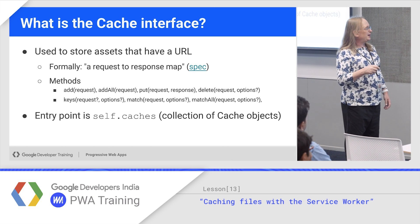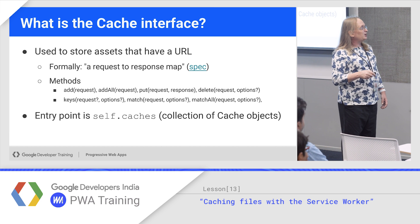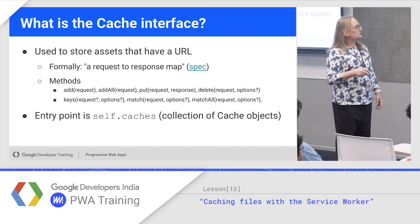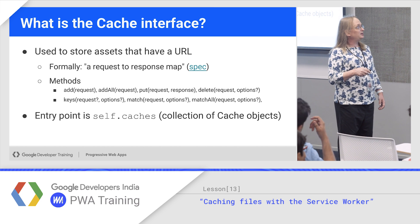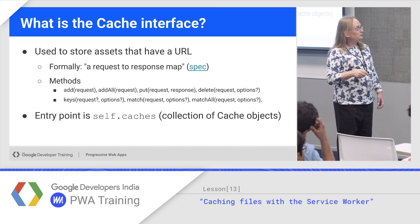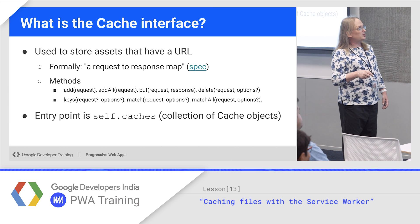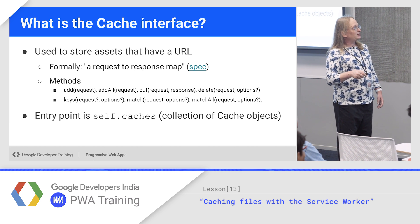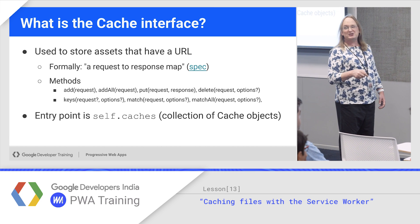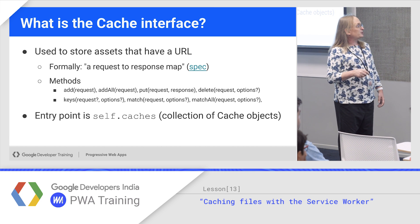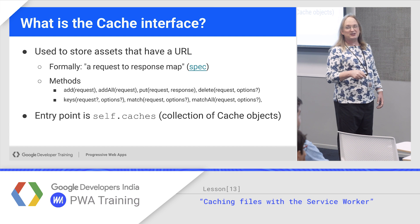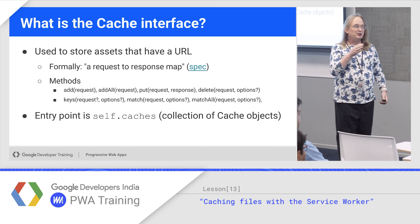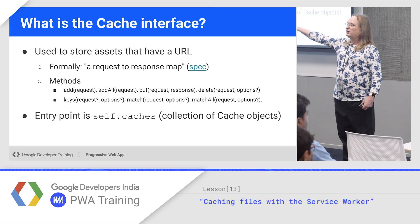So, typical API you might expect. You've seen addAll, which takes a list of items. Add takes one request or a URL, either one. You can do a put with an actual request object and a response. You can also delete a request, with an optional options parameter. You can ask for all the keys, optionally matching a request. You can call match with a single request to get a single result, or matchAll, which takes a request and gives you everything that matches — usually everything under that path.